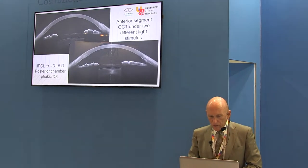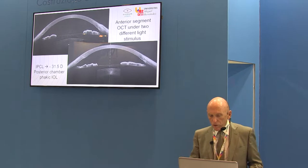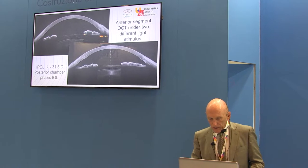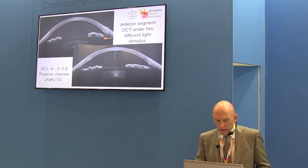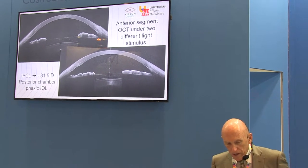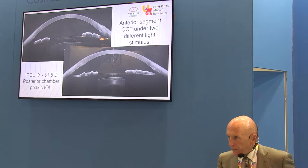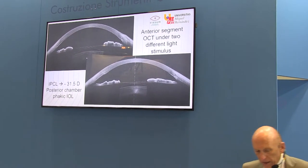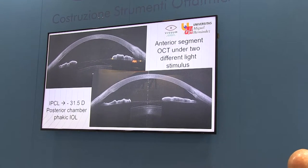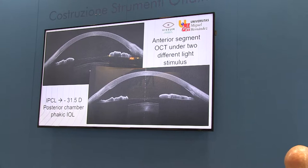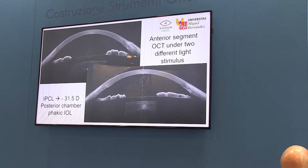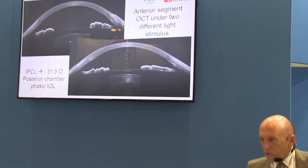Now let's go to this case. This was an anterior segment OCT on two different light stimuli. The pupil is dilated here, here the pupil is constricted, and we were using an IPCL — which is a new type of posterior chamber phakic lens. You see here that we have a very good central vault, but you can see on the contrary that the peripheral meniscus is too near to the crystalline lens. On contraction — that means when we induce accommodation — look here that there is direct contact of the peripheral meniscus with the crystalline lens.